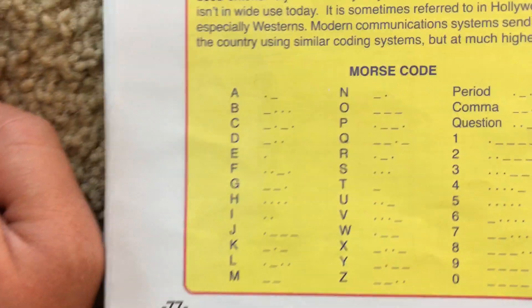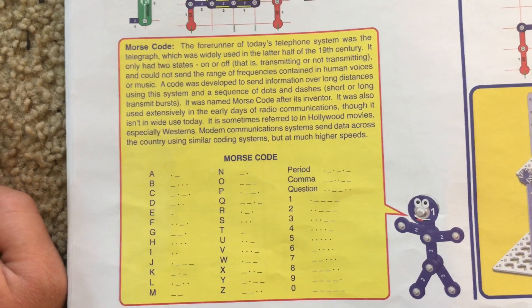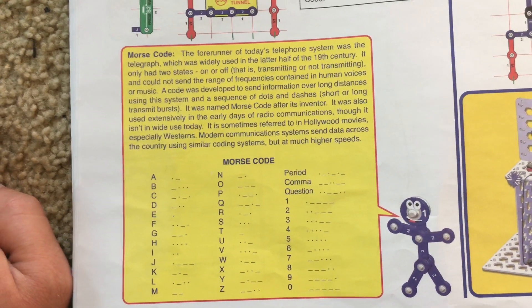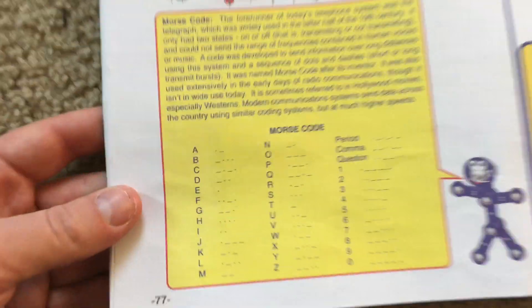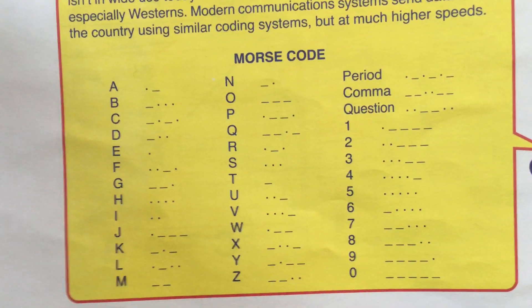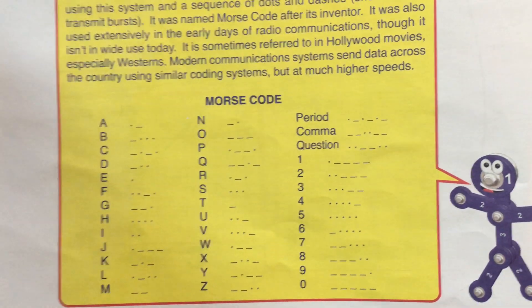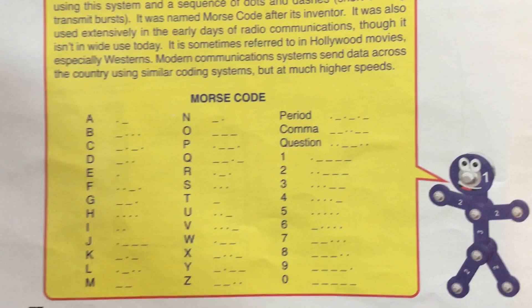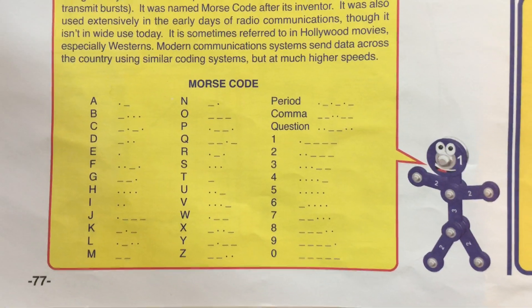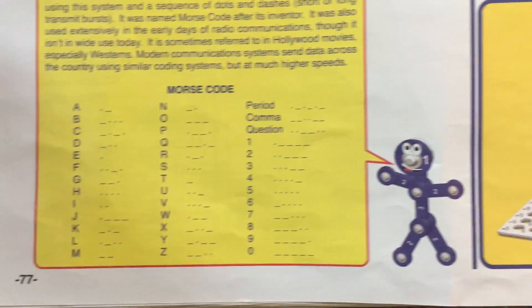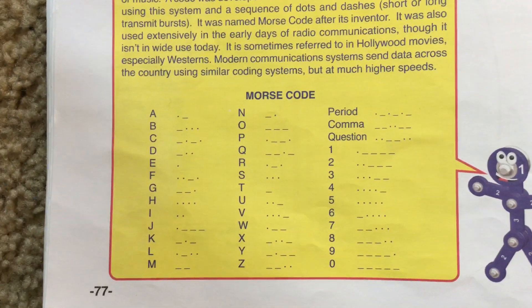It uses a series of dots and dashes that represent letters, numbers, and punctuation marks. You can practice all of the symbols by holding down the press switch for different periods of time. A dot would mean a very short press, while a dash would mean a very long one.